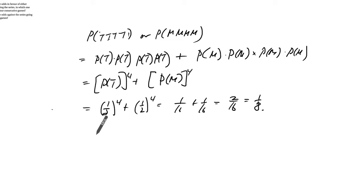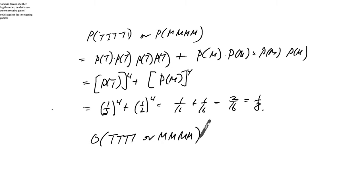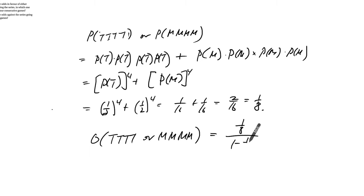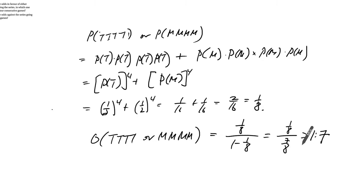That's the probability. The odds in favor of Toronto or Montreal sweeping the game — winning four in a row — is going to be one over eight, over one minus one over eight, which is seven over eight. So the odds are one in seven, or one over seven.